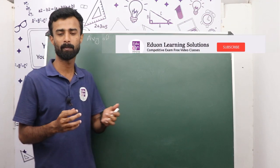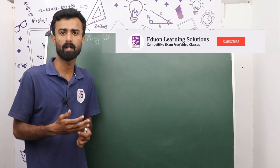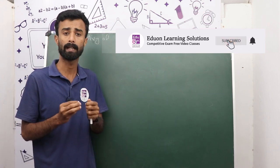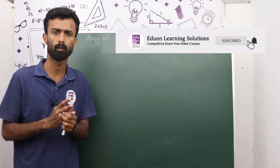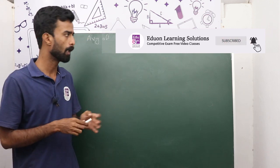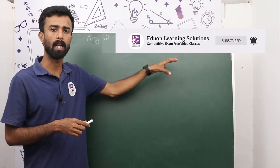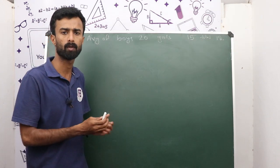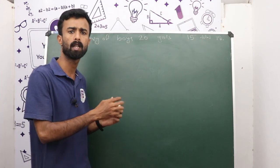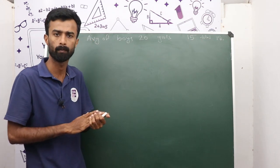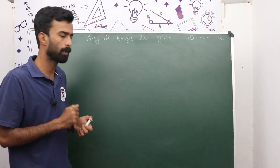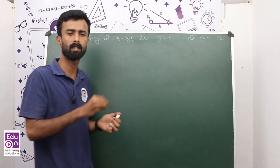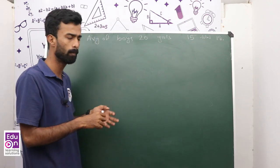So my dear friends, what are the questions about alligations? There are two categories, two values. We call it combined forms. We call it value. What are the questions about alligations?